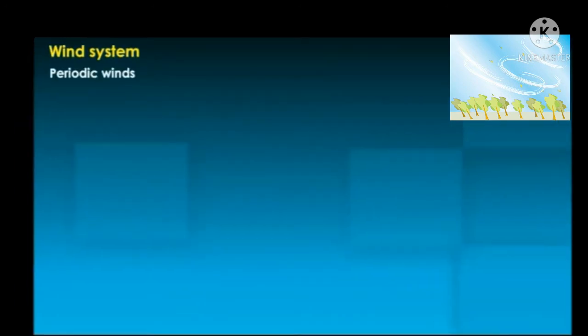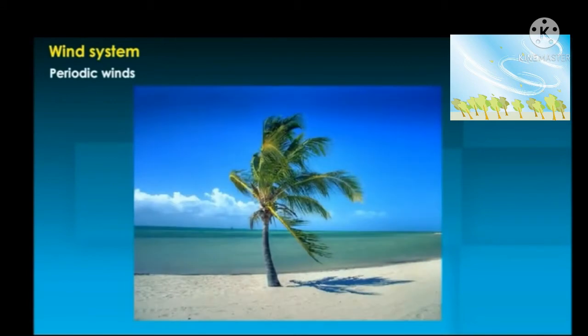Permanent winds are the winds which blow throughout the year in a particular direction and over a particular region. They are also known as prevailing winds or planetary winds. They include the trade winds, anti-trade winds, and polar winds.